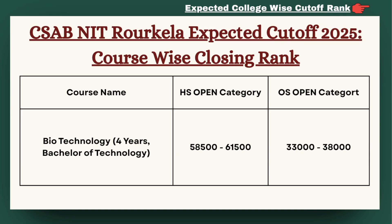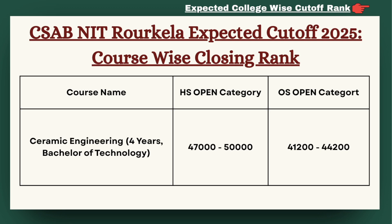Moving ahead in the list we have Biotechnology Engineering. For HS category, the cutoff can be expected between 58,500 to 61,500. For OS category, the cutoff can be expected between 33,000 to 38,000. Next we have Ceramic Engineering — for HS category between 47,000 to 50,000, and for OS category between 41,200 to 44,200.